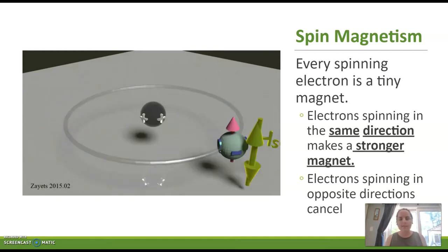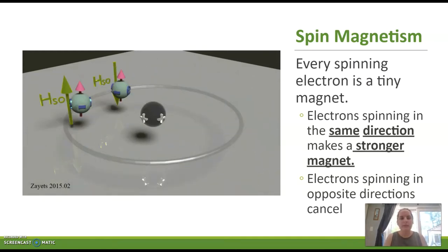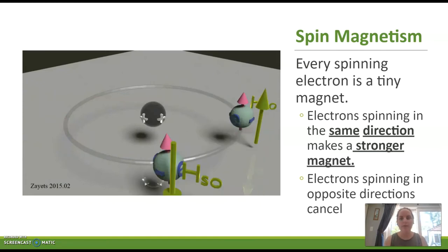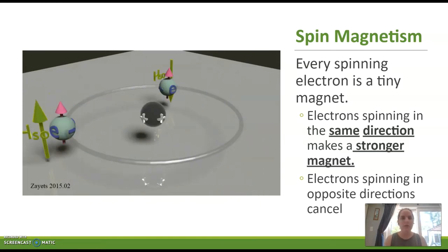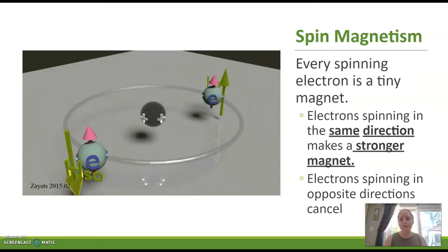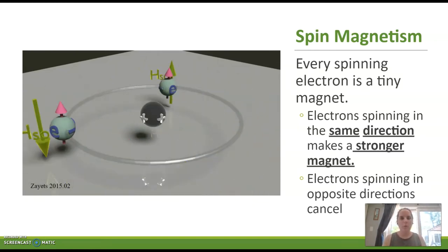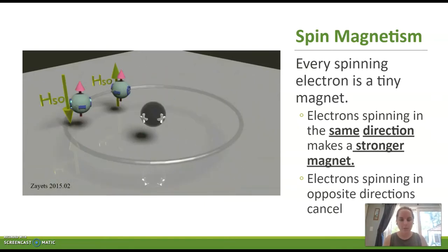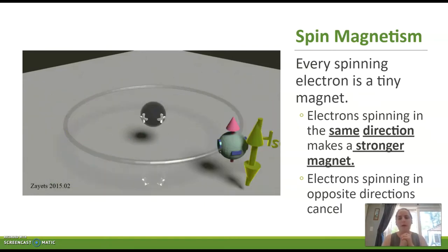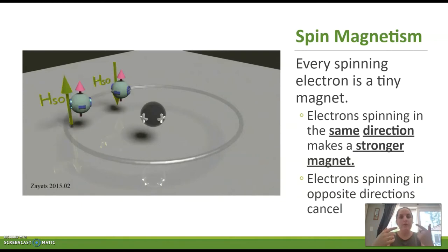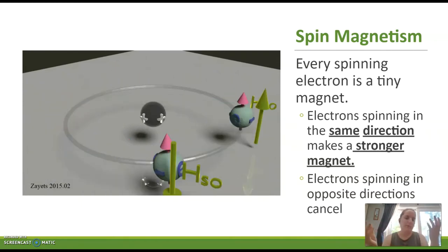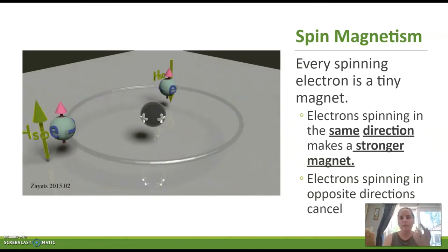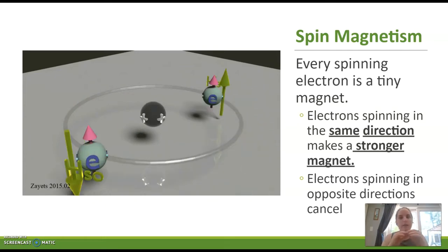The spin of an atom itself — with those electrons orbiting around — is important. Not only do those electrons orbit, but they also spin like a top. Not all material is magnetic. In some materials, the spin of those electrons actually cancels out one another. Think of one electron going clockwise and the other counterclockwise — that magnetic field is going to cancel out. Where electrons spin in the same direction, the magnet is going to be stronger.